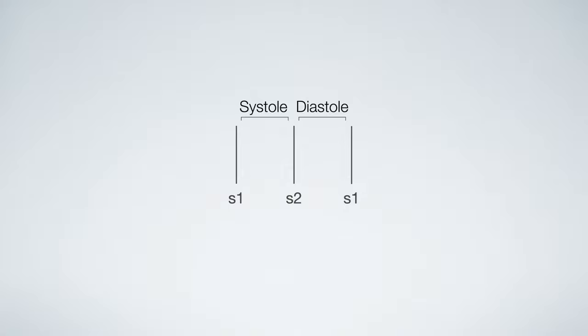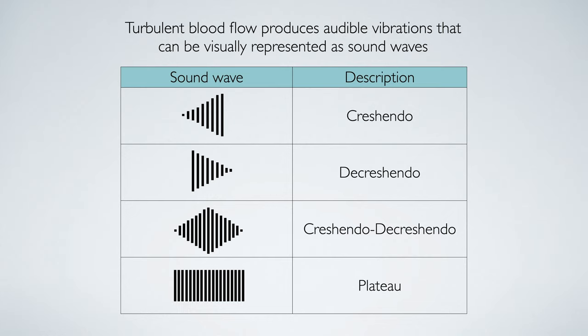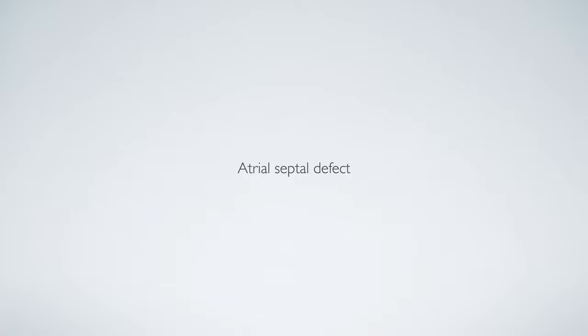By now you should be familiar with our diagram that depicts one movement through the cardiac cycle and that normal heart sounds sound like the phrase 'lub dub'. You should also be familiar with the concept that turbulent blood flow produces audible vibrations, which can be visually represented with sound wave patterns. If none of this sounds familiar, please go back and watch the previous video.